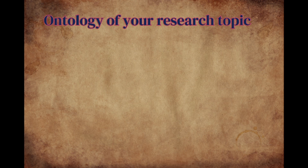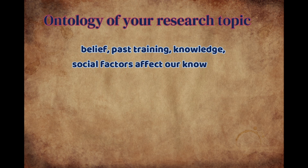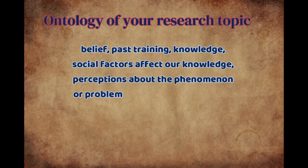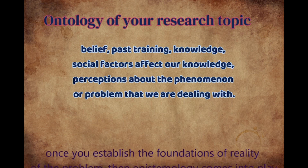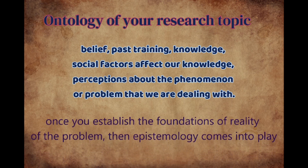Every time it is the case — whether it's our belief, our past training, past knowledge, or the social influence affecting our perceptions about the research problem we are dealing with — these are the ontological dimensions of our research topics. Once you decide on the foundations of the reality of the crime, then you can explore the options for getting knowledge about that reality, that is, epistemology.